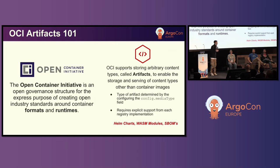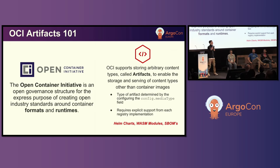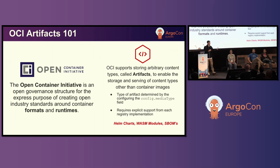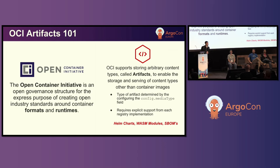OCI artifacts allow us to use container repositories for storage of things aside from container images — things like Helm charts, Wasm modules, software bill of materials artifacts. These are already able to be stored as OCI artifacts. So why can't we take that same concept and extend it to ArgoCD?